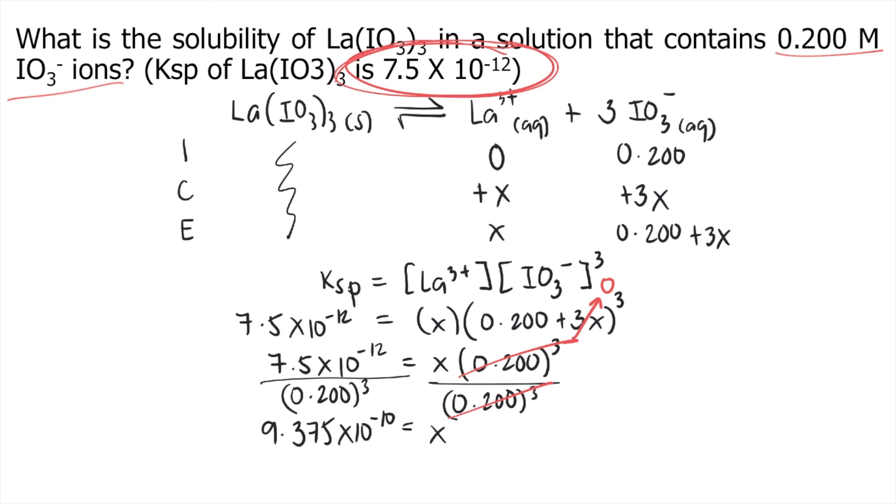Since we're talking about solubility, the unit is molar. So the answer to this question is 9.375 times 10 to the negative 10 molar.